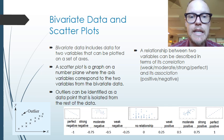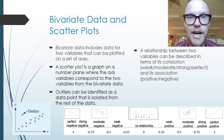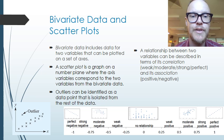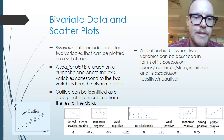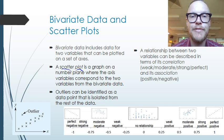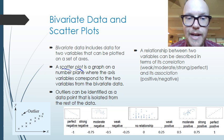Bivariate data includes data for two sets of variables — two sets of data that might be linked. For example, people's heights and weights might be linked. We can graph them on the same set of axes using a scatter plot, which graphs the two sets of data one on each axis — so we might graph people's height on the x-axis and their weight on the y-axis.